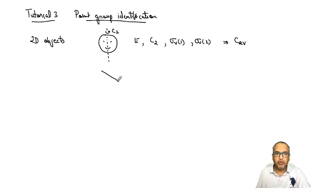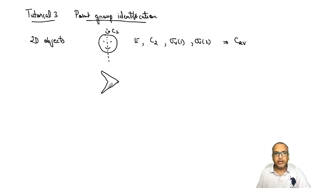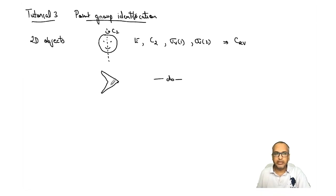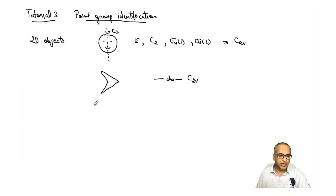Now let's look at an arrowhead — just the arrowhead, not the complete arrow. The arrowhead has the same set of symmetry elements: a C2 running through it, a sigma in the plane of the board, and a sigma perpendicular to the plane of the board, both containing C2. So again the point group is C2v.